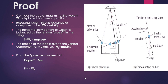From the figure on the right-hand side, when the bob is moved from mean to extreme position, x is the displacement, L is the length of the pendulum, and theta is the angle. There are two force components acting on the bob: the horizontal component along the string is mg cosθ, and the vertical component perpendicular to the string is mg sinθ. These are the two forces acting on the simple pendulum.